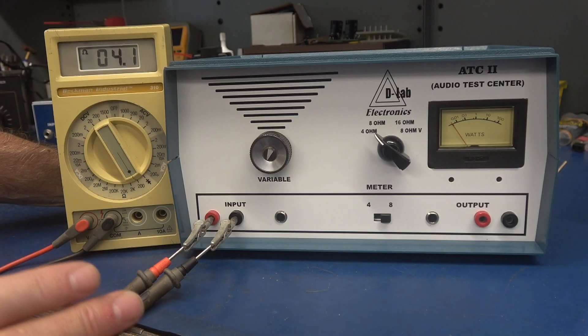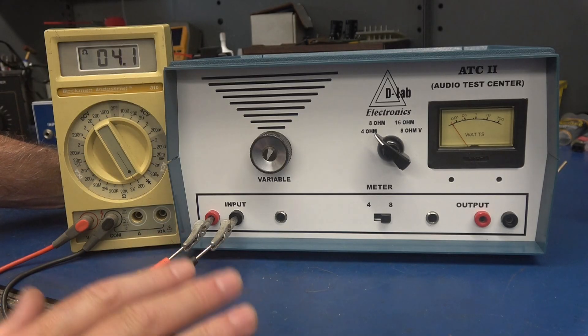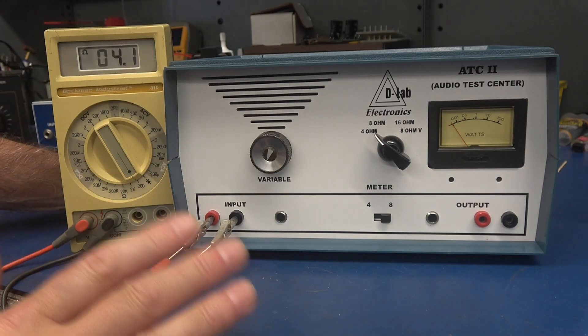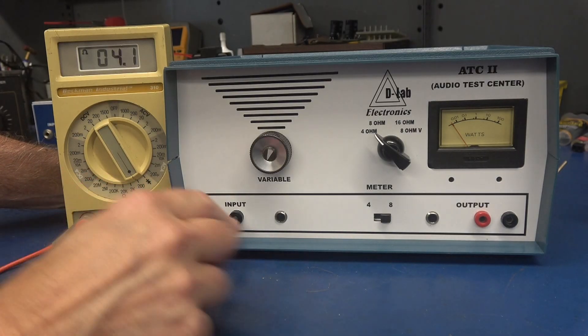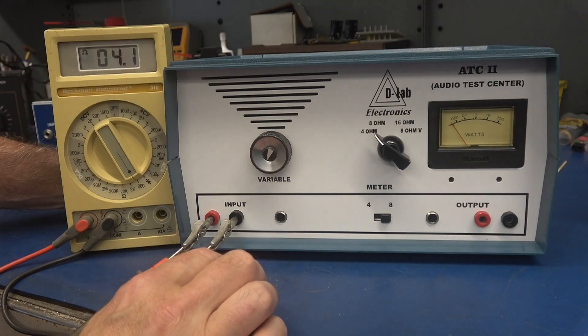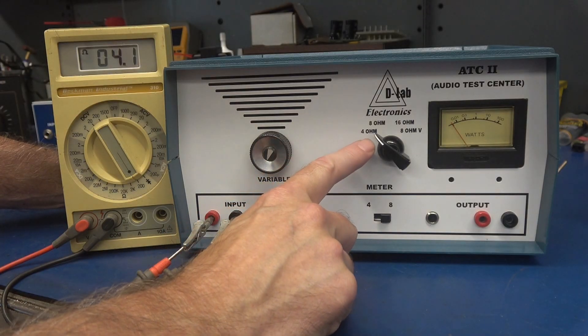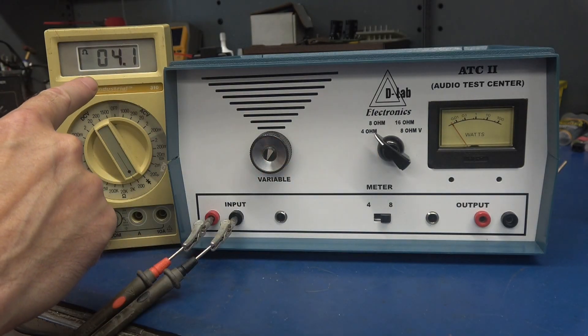So the ATC2 has some pretty unique features. Number one, it is a standalone dummy load for testing your amps. So you have inputs on either banana jack or quarter inch. Currently, I'm in the four ohm dummy load position. You can see that on the meter.